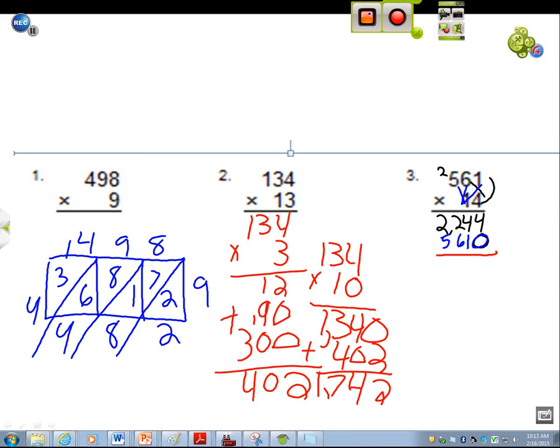Then you would add them all up. 4 plus 0. And then 4 plus 1. And then 6 plus 8, which is 8. 6 plus 2, which is 8. And then 5 plus 2 is 7.